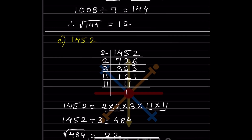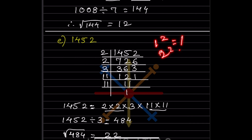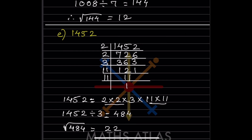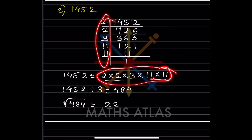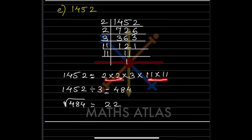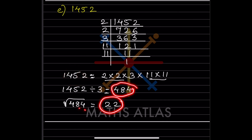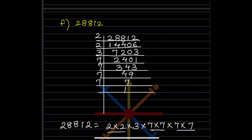For 1452, we start with 2, then go with 3. We get 121, which factors as 11 × 11. You should at least learn the squares up to 20: 1² = 1, 2² = 4, and so on up to 20² = 400. After grouping, 3 is alone. So we divide 1452 by 3, giving 484. The square root of 484 is 22, because 22 × 22 = 484.